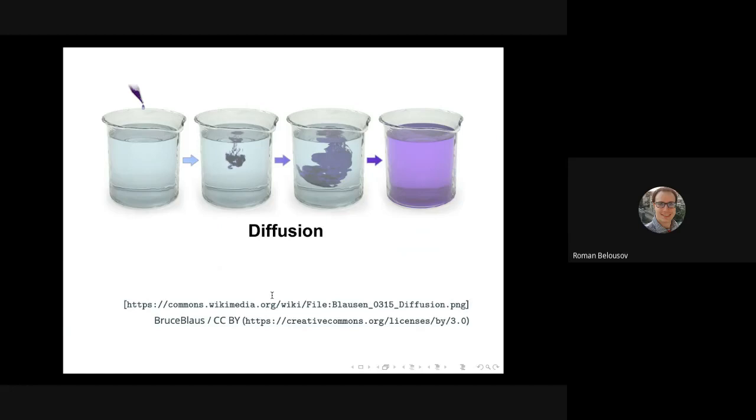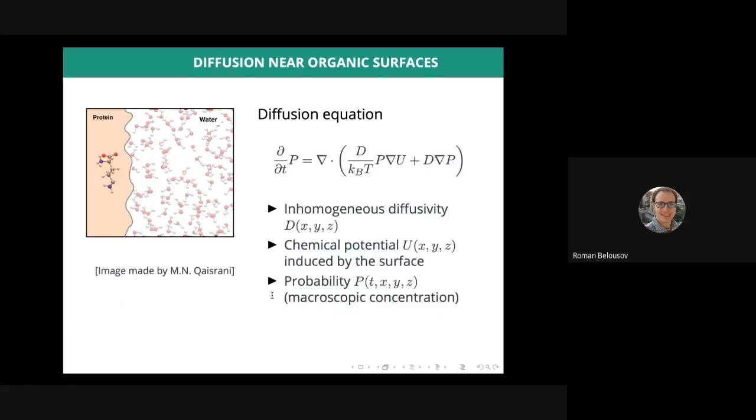How fast this process goes is determined by the diffusion coefficient, which in this case we would call the diffusion constant. In a more general setting, however, we may need to consider inhomogeneous diffusion with space-dependent diffusion coefficient D and chemical potential U. This situation applies to many problems of biophysical interest in which diffusion takes place in aqueous solutions near organic surfaces such as proteins.